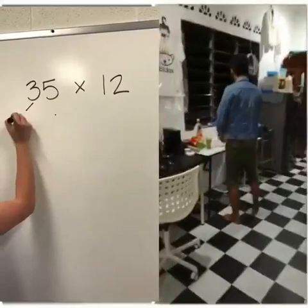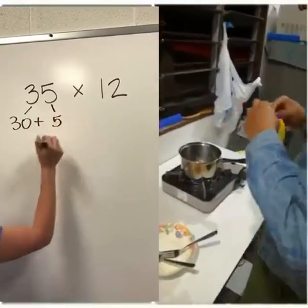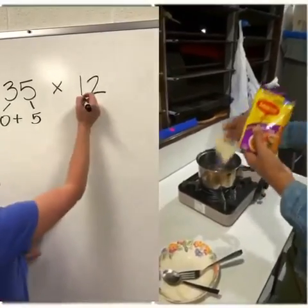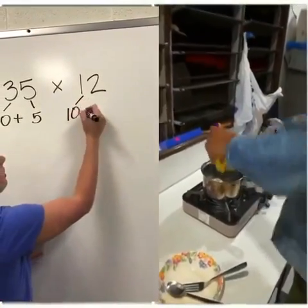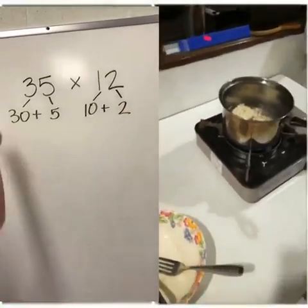I've got three tens which is 30 and five ones, so that is 30 plus 5. 12 is one ten plus two ones. Okay, so that's step one.